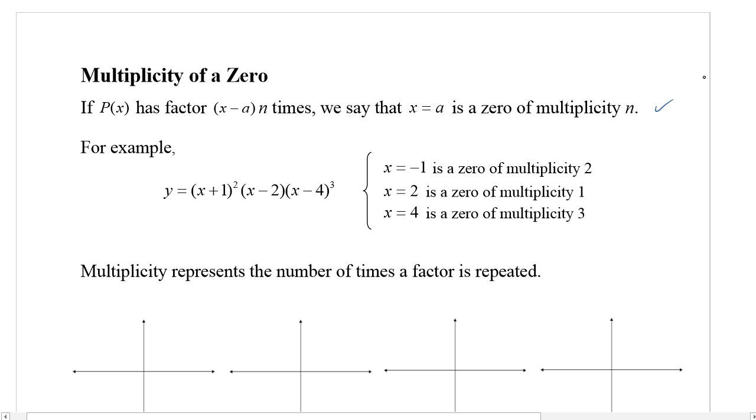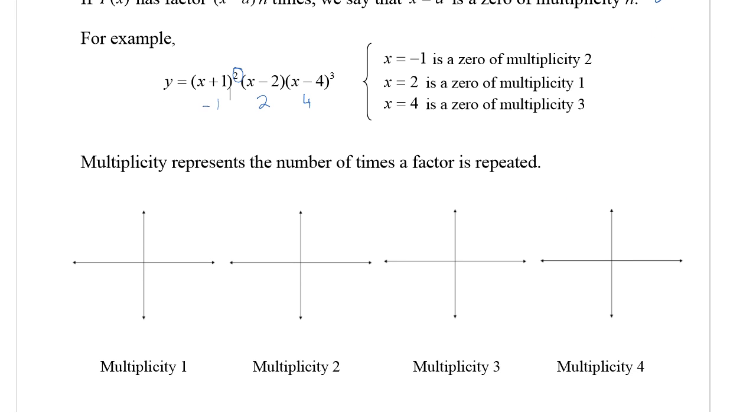That's a lot of words. I think the examples will make it make sense. If we look at this polynomial y = (x+1)²(x-2)(x-4)³, the zero is negative 1 with multiplicity 2, x=2 has multiplicity 1, and x=4 has multiplicity 3. Multiplicity represents the number of times a factor is repeated.